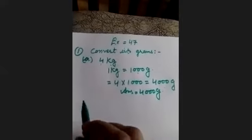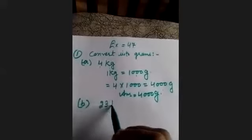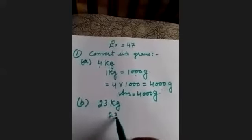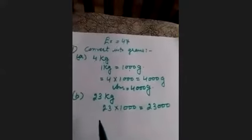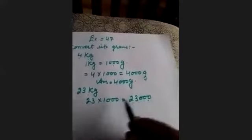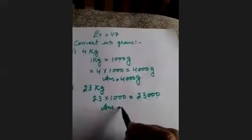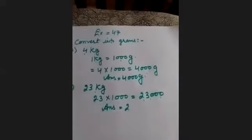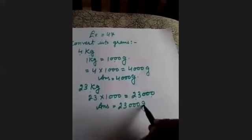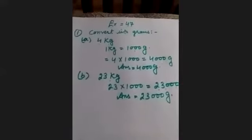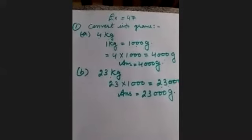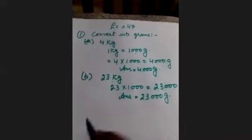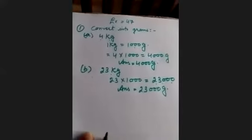Next is Part B: 23 kg. Same method — 23 × 1000 = 23,000. So in 23 kg you have 23,000 grams. In the first question you have four parts A, B, C, and D. We have discussed parts A and B; complete parts C and D after this lecture.